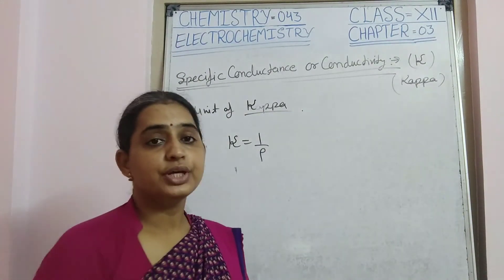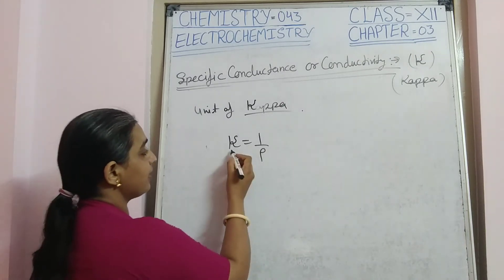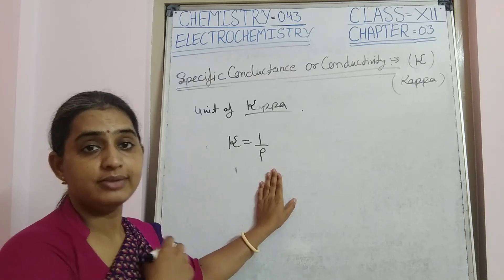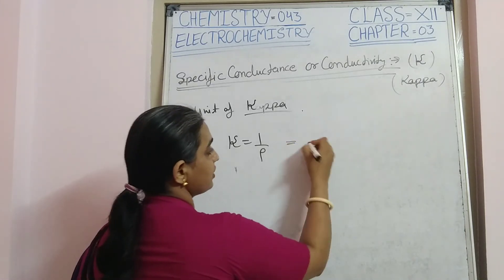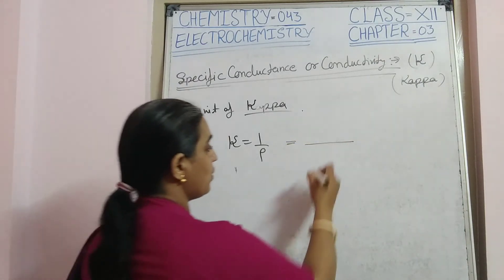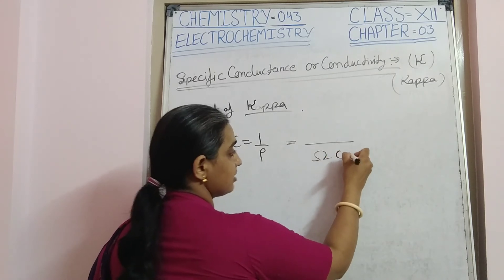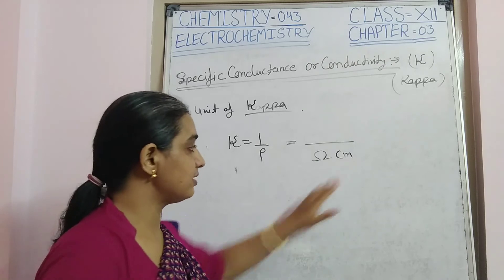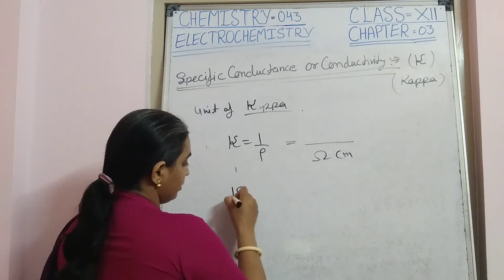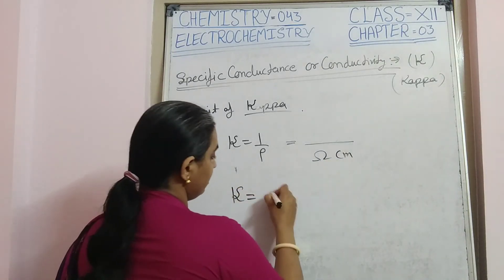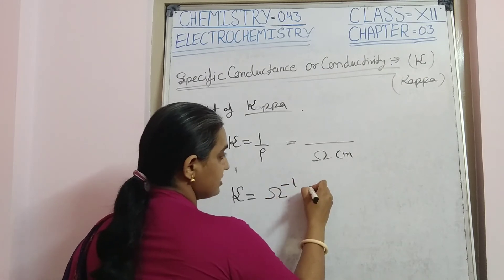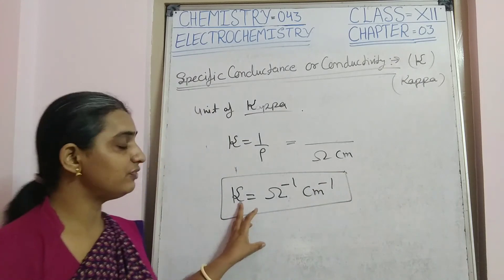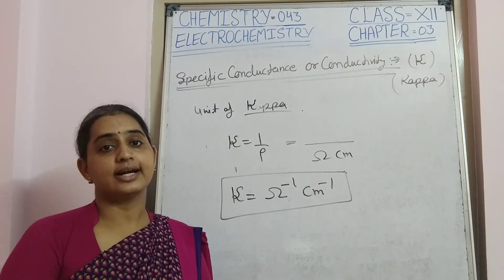For the unit of kappa (κ), we use κ = 1/ρ. The unit of rho is ohm·cm, so the unit of κ is ohm⁻¹·cm⁻¹. This is the unit of specific conductance or conductivity.